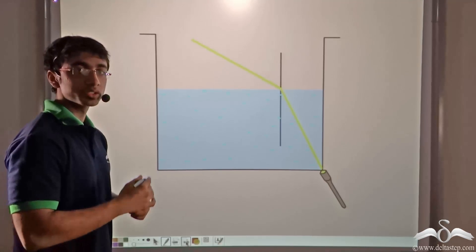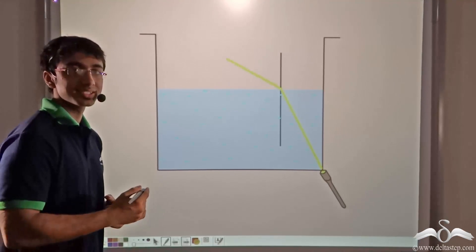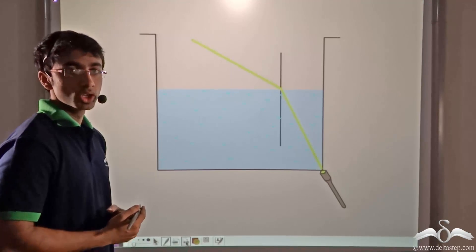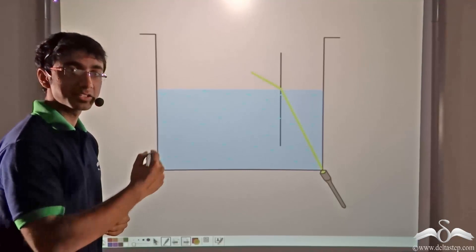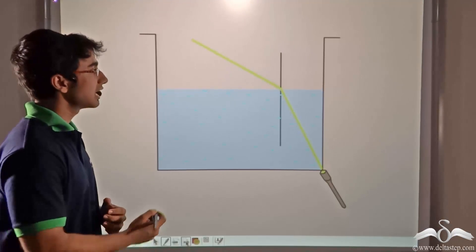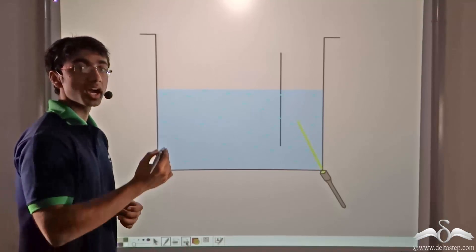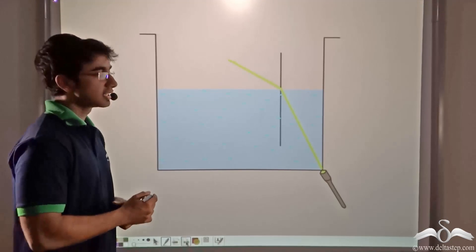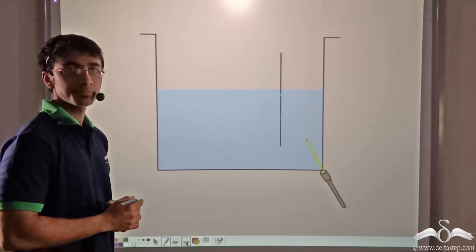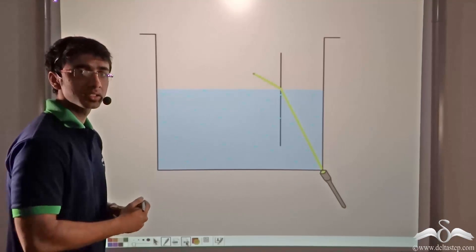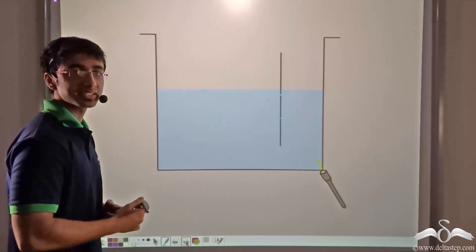When it is travelling through water, it is incident on the water-air interface. We know that water is denser than air, so light is incident from a denser medium to a rarer medium. Due to this, after refraction, the light ray bends away from the normal. You will notice that the path this light ray is taking is exactly similar to the path the light ray was taking in the previous case.